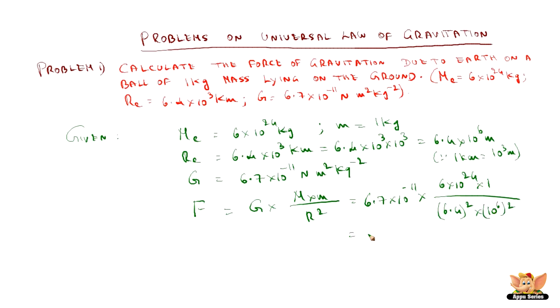Bring all the integers on one side and all the exponentials on the other side: -11+24, and here it is 12, so when it goes up it becomes minus. This gives us a value of 9.8 Newtons. So the gravitational force of earth on 1 kg ball is 9.8 Newtons.